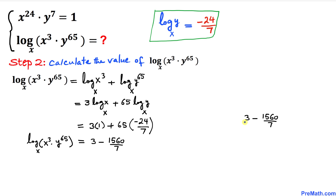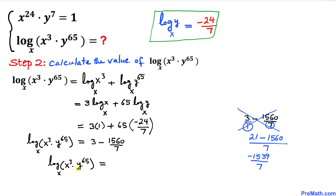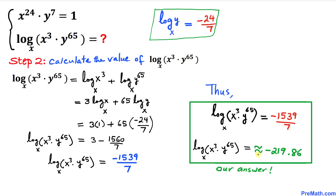To simplify, write 3 as 3 over 1 and cross-multiply: 3 times 7 is 21, minus 1 times 1560 is 1560, all over 7. That gives us negative 1539 over 7. So log base x of x power 3 times y power 65 equals negative 1539 over 7, which in decimal is approximately negative 219.86. Thanks for watching and please don't forget to subscribe to my channel for more exciting videos.